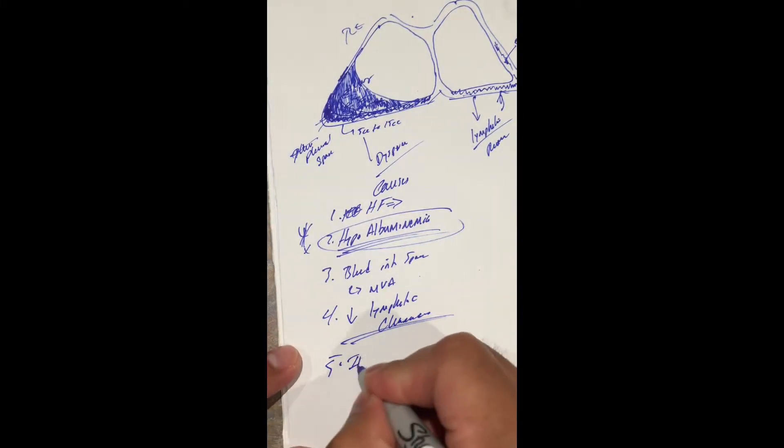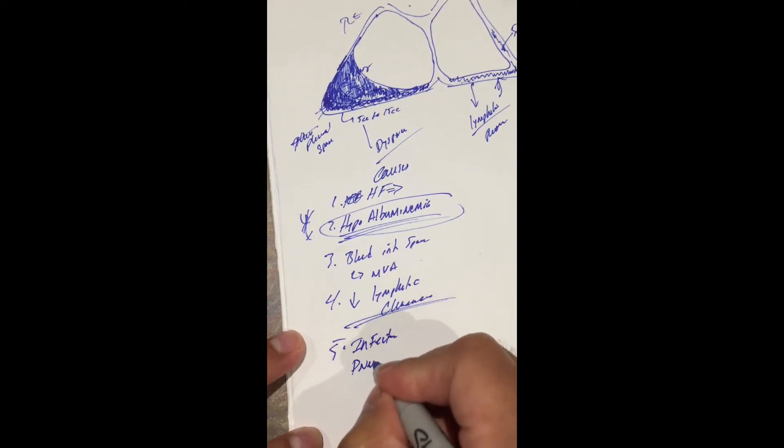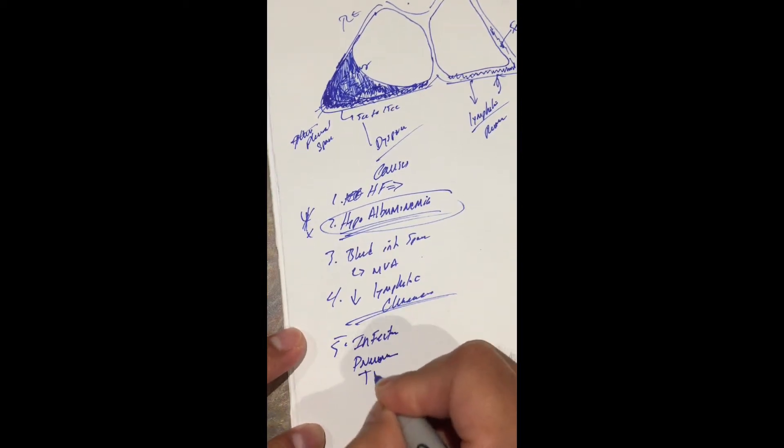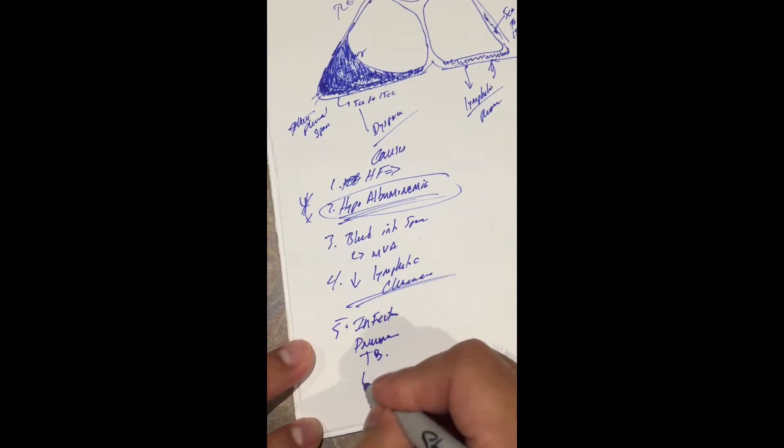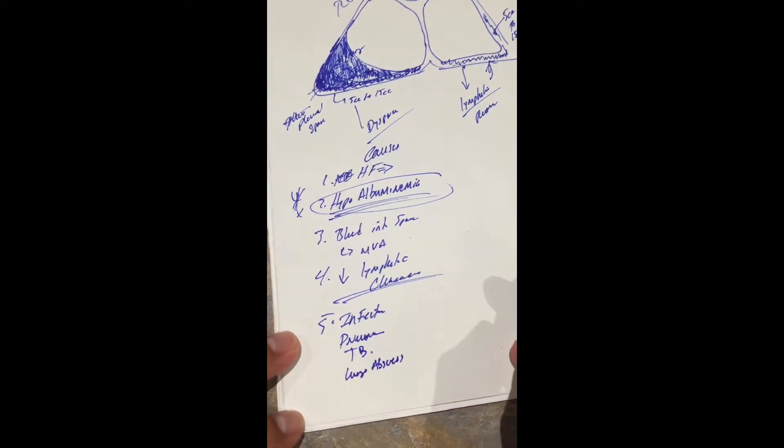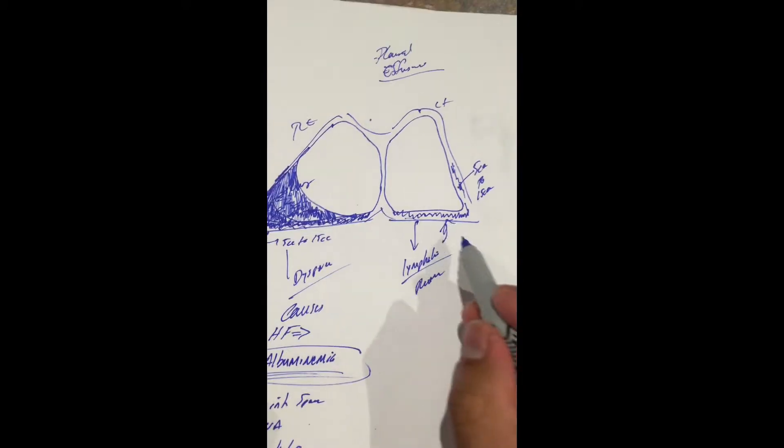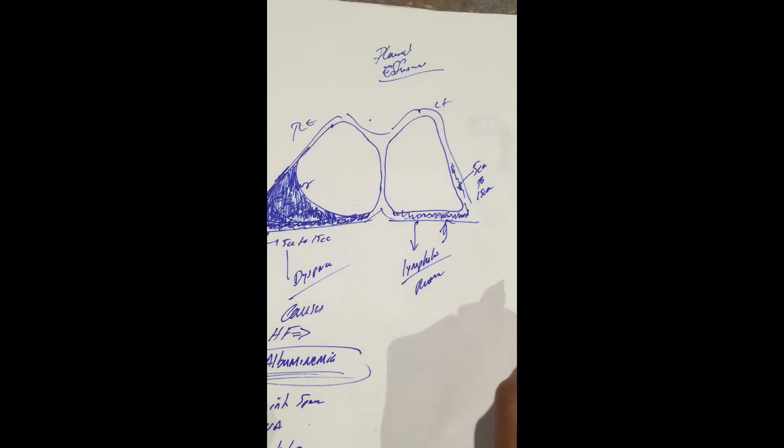Number five: some type of infection. Now this could be like pneumonia, tuberculosis, some type of lung abscess. Again, that would increase the amount of fluid accumulation in that space.